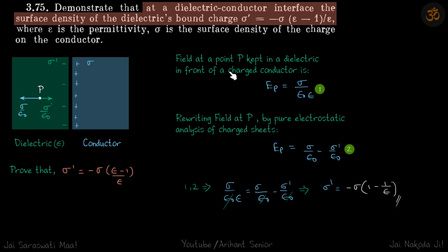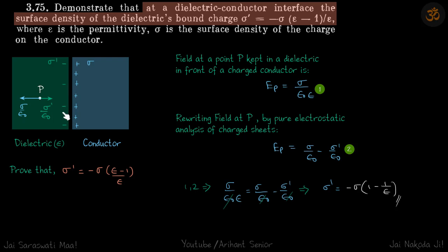The field at point P kept in a dielectric in front of a charged conductor is sigma divided by epsilon-naught times epsilon. Rewriting this using pure electrostatic analysis of the charged sheets: E at P equals sigma by epsilon (due to the positive charge sheet) plus sigma dash by epsilon (due to the negative charge sheet). Here we are treating them simply as sheets, not considering the dielectric property.